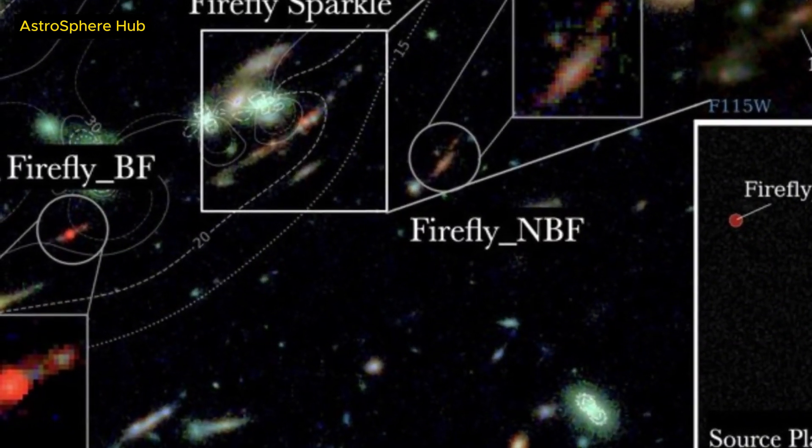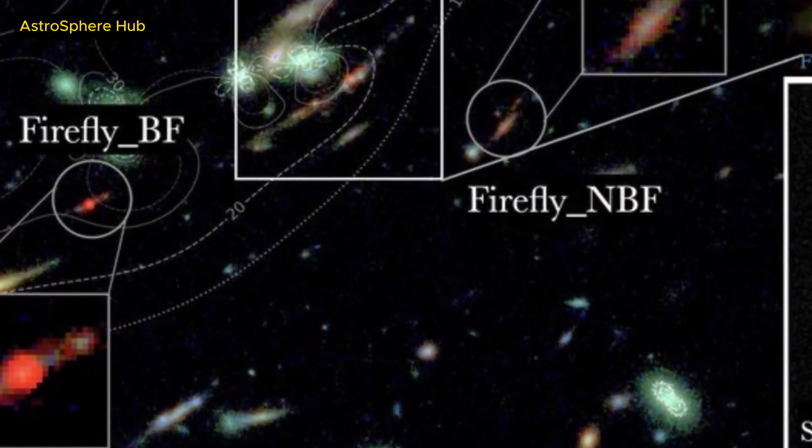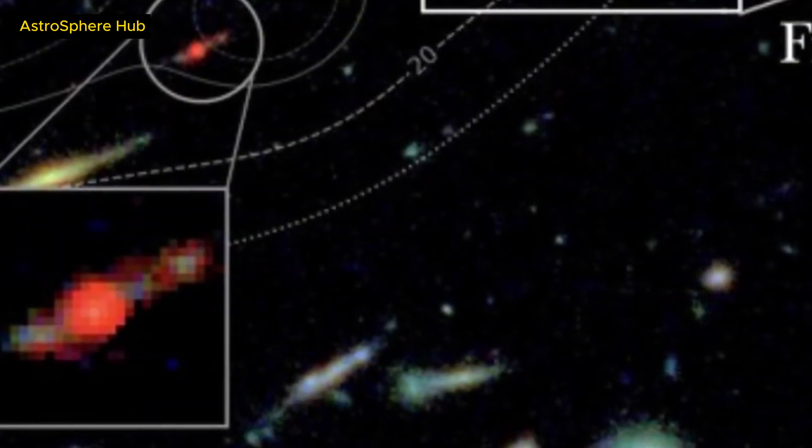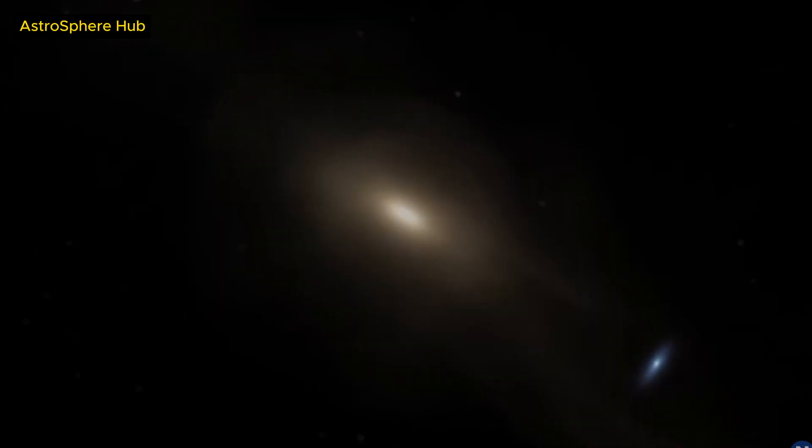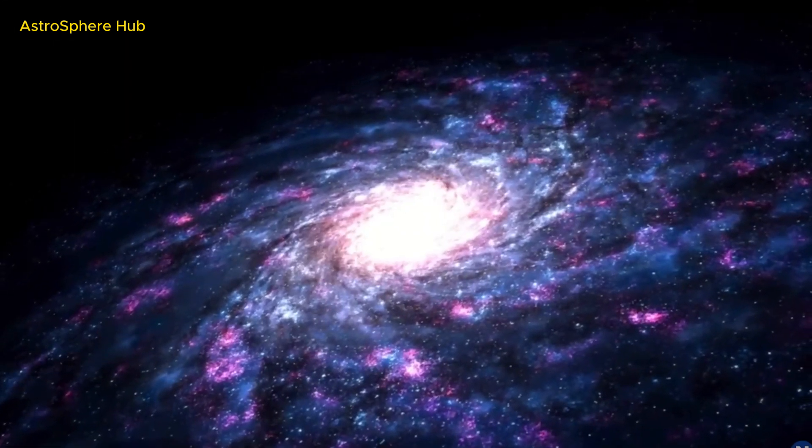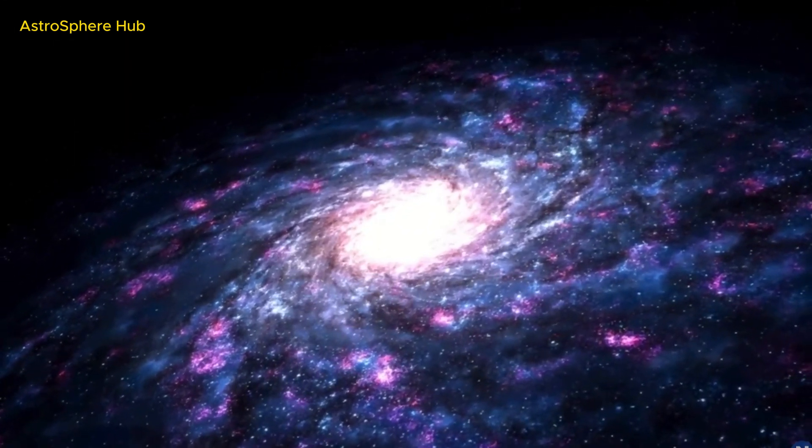These high temperatures indicate that it contains very massive and bright stars, which are more than 10 times the mass of the Sun. These stars are very rare and short-lived, and they produce a lot of energy and radiation.